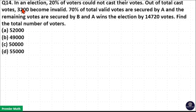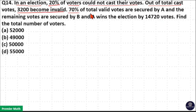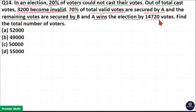In an election, 20% of the voters could not cast their vote. Out of total cast votes, 3200 become invalid. 70% of the total valid votes are secured by A and the remaining votes are secured by B. A wins the election by 14720 votes. Find the total number of voters.